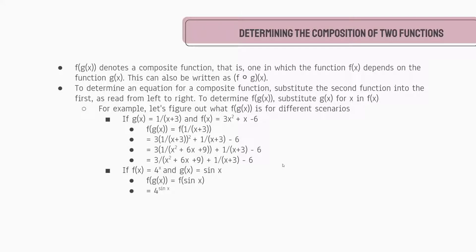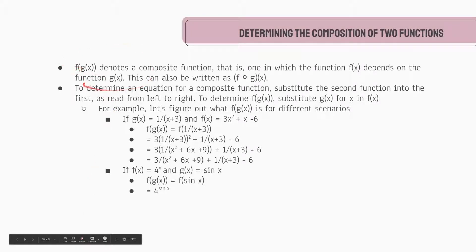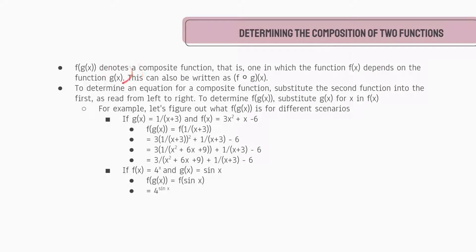First, we're going to talk about what a composition of two functions looks like. f of g of x — which is how we would read this — denotes a composite function, that is, one in which the function f(x) depends on the function g(x). It can also be written in the following format: an f with a little circle in the middle, g, and then all of x — written as (f ∘ g)(x).